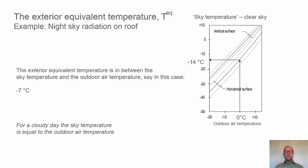Going back to the exterior equivalent temperature, it will be somewhere in between this minus 14 and outdoor temperature zero, so it might be minus seven. This depends a bit on if it's windy or not. If it's very windy it would be closer to the outdoor air temperature. If it's a very silent or still night, it would be closer to minus 14.